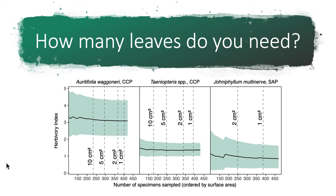The graphs I've shown are for damage type diversity, but we can also make the same kinds of graphs for the herbivory index — simply the percentage of leaf area that has been removed. Once again, past 200 to 250 leaves in all three cases, the mean value for the herbivory index doesn't really change, and the width of the confidence intervals is pretty constant as well.